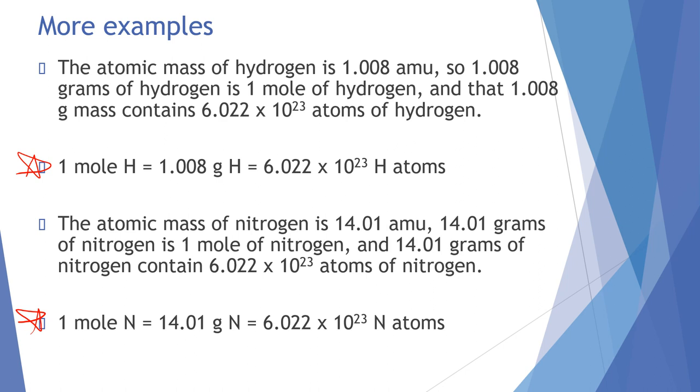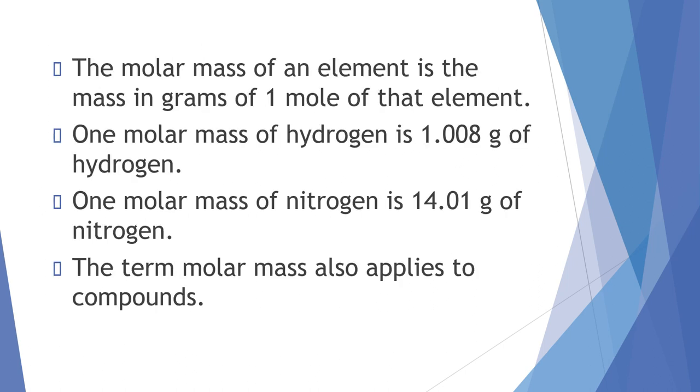1 mole is 14.01 grams of nitrogen, for nitrogen, and then it's still the same number. So remember, 1 mole of anything is the molar mass of that species, and also Avogadro's number. Like I said, it depends on what you have. So the molar mass of an element is the mass in grams of 1 mole of that. We can use the term molar mass to apply to compounds like CO2, H2O. Just kind of keep that in mind. You'll hear these quite a bit from me. The terms molar mass, Avogadro's number, grams per mole. You'll see these a lot, basically till the end of the semester.